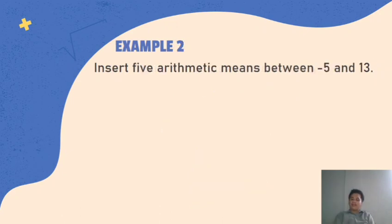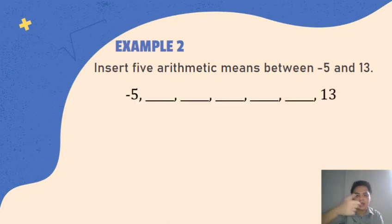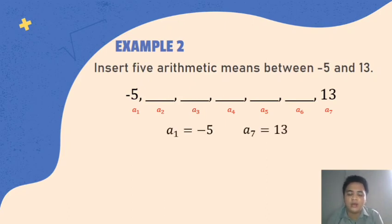So, for our next example, let us insert 5 arithmetic means between negative 5 and 13. So, imagine, you have negative 5 as your first term and you have 13 as your last term. Tapos, you will insert 5 numbers. So, gano'y itsura niya? Negative 5, tapos, limang underline for the numbers na hinahanap and then 13 for our last term. Tapos, papangalanan mo sila para alam mo yung bilang. So, you have a sub 1 as negative 5 tapos and so on and so forth and our a sub 7 is 13.